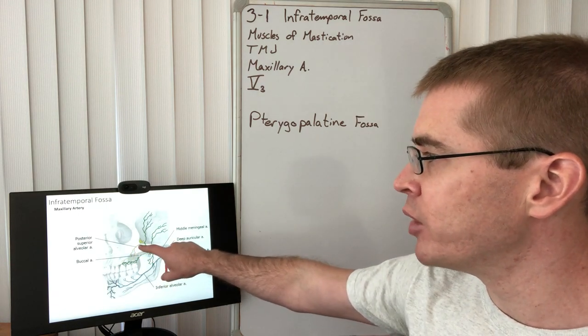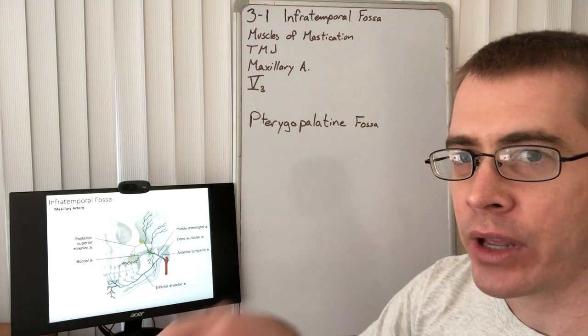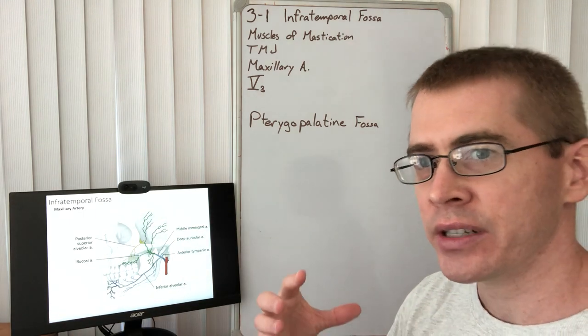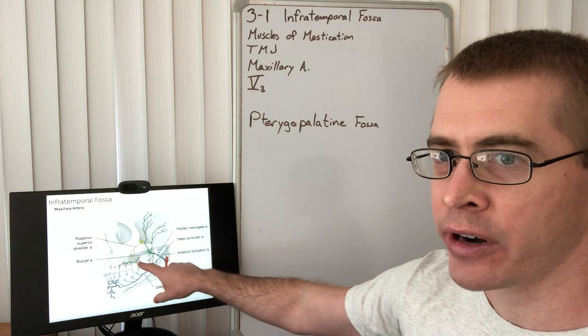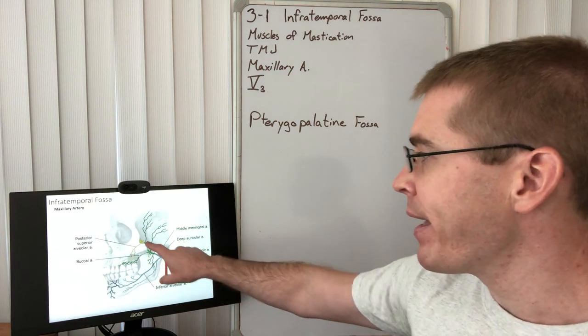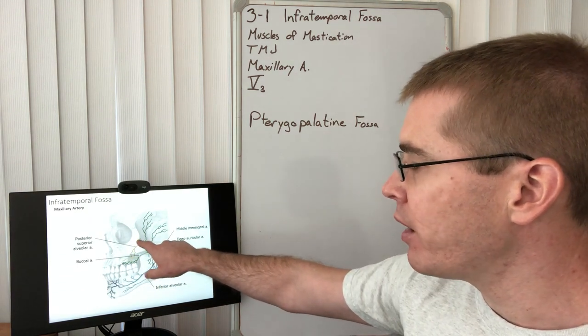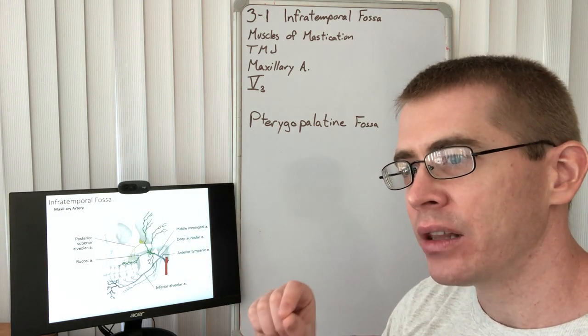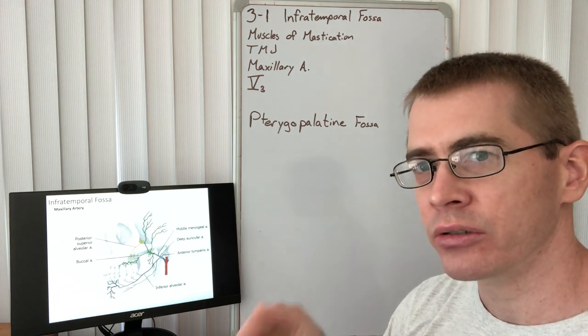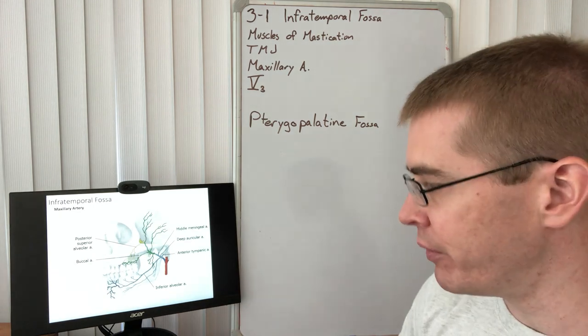We also have the distal portion which contains deeper arteries. The posterior superior alveolar artery supplying the teeth and eventually the distal portion becomes the sphenopalatine artery which enters the deeper regions of the face.